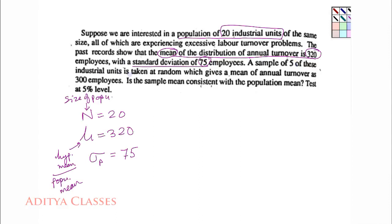A sample of 5 of these industrial units is taken at random which gives a mean annual turnover of 300. So n equals 5, sample size is 5. And the sample mean x-bar is 300. And is the sample mean consistent with population mean? Test at 5% level of significance α equals 5%.